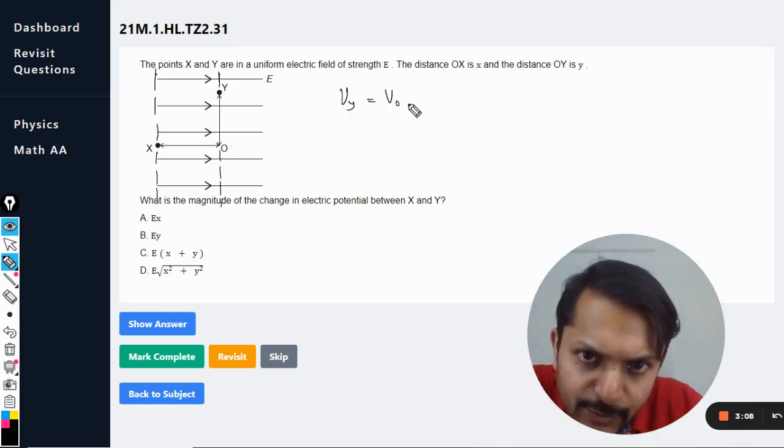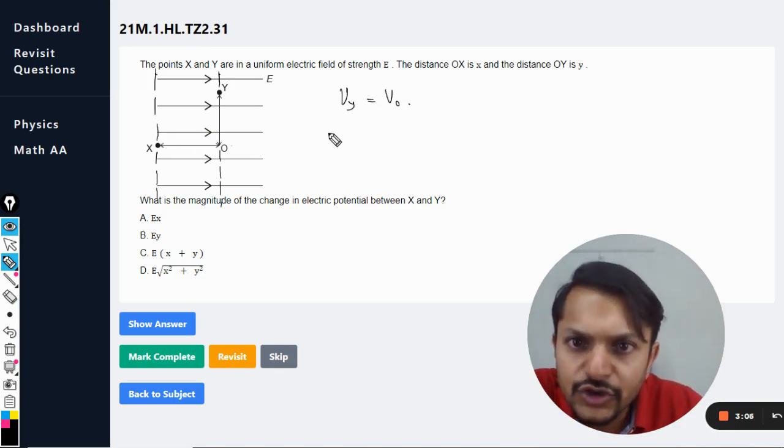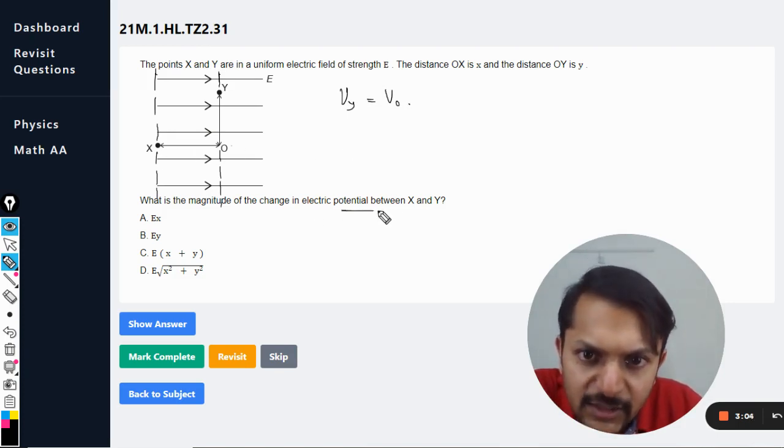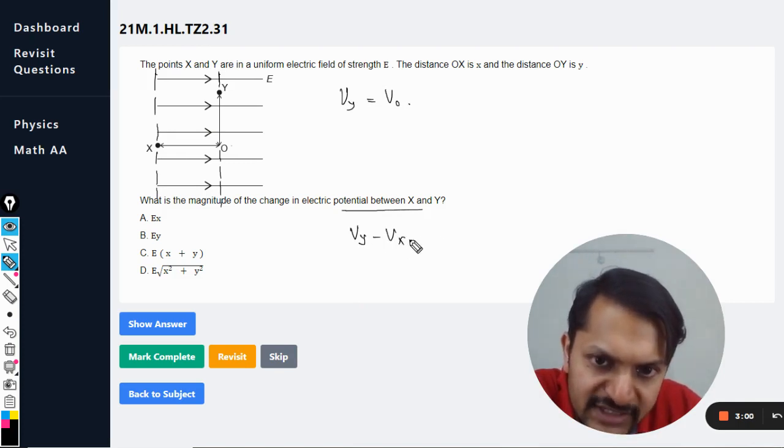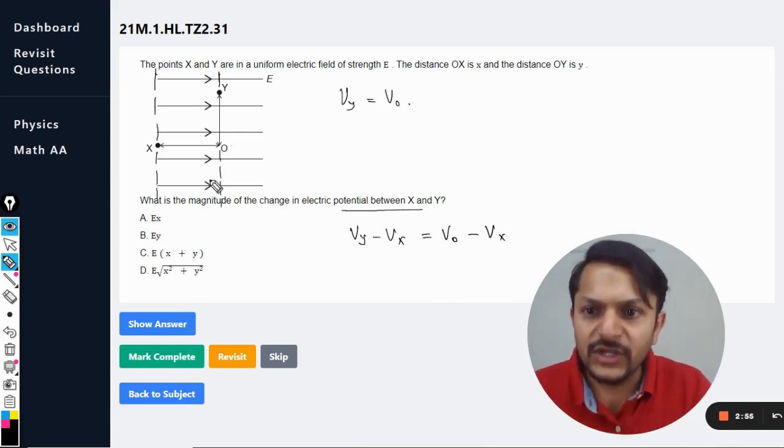Potential at Y is equal to potential at O. Now so you want to find the potential difference between Y and X. Obviously this can now be written as V_O minus V_X.